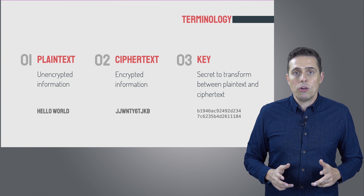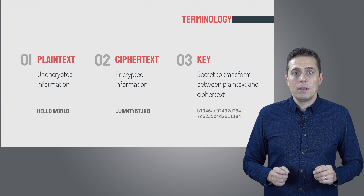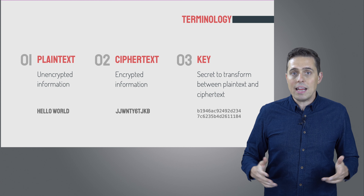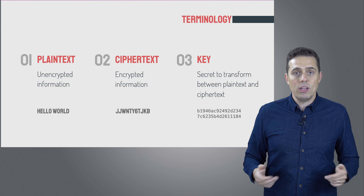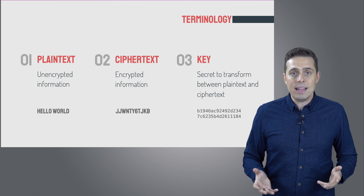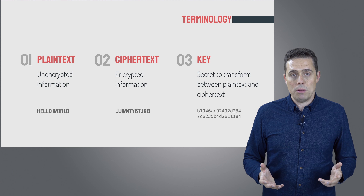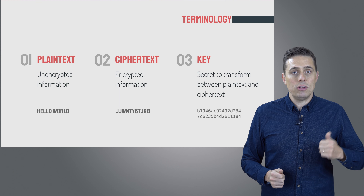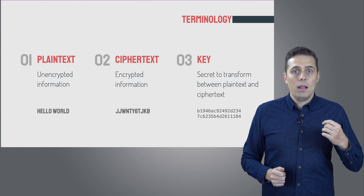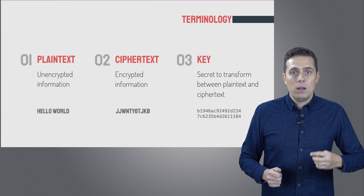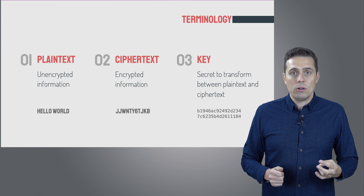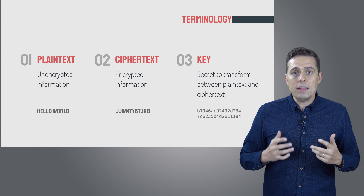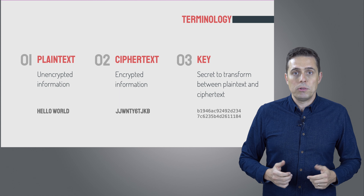The first term is called the plaintext. The plaintext is the message — it's the thing that hasn't been encrypted yet. A text message, an email, a video, a picture, whatever. It's the thing that you want to encrypt.